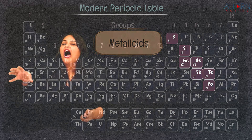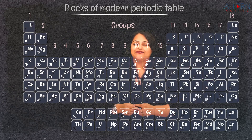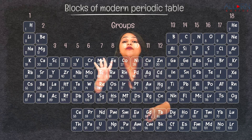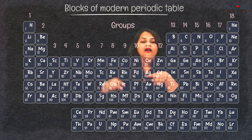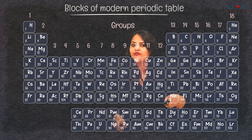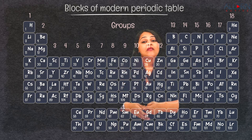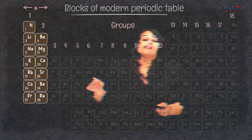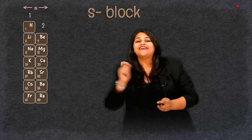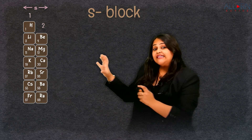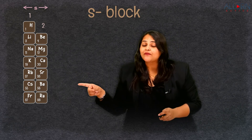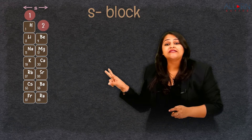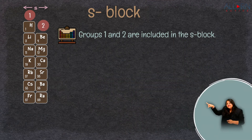Now let's see how the blocks of the modern periodic table were classified. There are four blocks: the S block, the D block, the P block, and at the bottom, the two series form the F block. In the S block, if you carefully look, you will observe there are two groups present, and the elements in those groups are placed based on the valency of the atom.